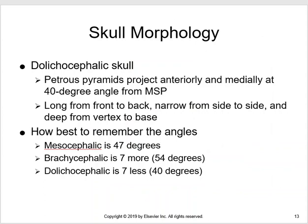In a patient with an elongated oval shaped skull — called a dolicocephalic skull — the petrous ridges are at 40 degrees. The difference between average and a round skull is seven degrees, and between average and a very elongated oval skull is also seven degrees. So: mesocephalic is 47, brachycephalic is 54, and dolicocephalic is 40. Remember 47 as your average and the other two are seven degrees above or below.